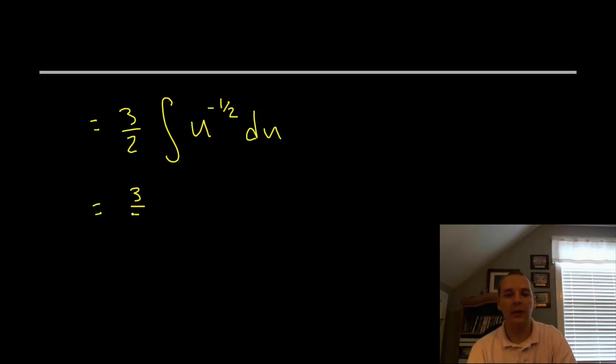So we'll have 3 halves and we'll add 1 to this exponent, so it will become u to the positive 1 half, that's negative 1 half plus 1. Now you could say divided by 1 half, but usually when you're dividing by another fraction, a better way to do that instead is to multiply by the reciprocal. So we'll instead multiply by 2 over 1, and then plus c.